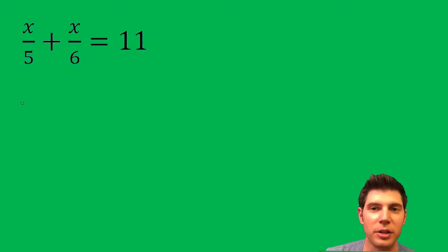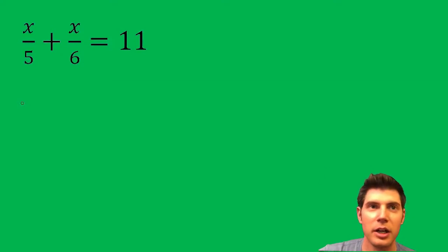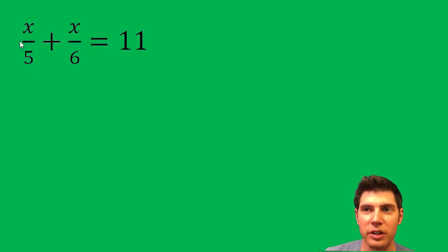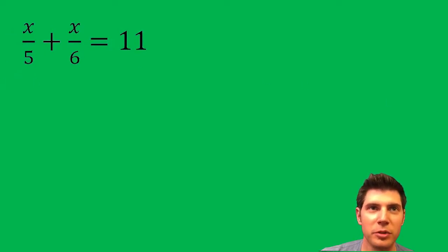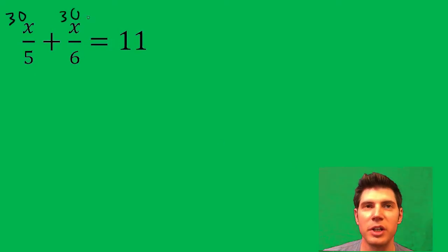Hey guys, welcome to this video. We're going to solve for x. What I like to do here to get rid of the fractions is something I call clearing the fractions. You're going to multiply everything by whatever is going to clear out all the fractions. So in this case, if we multiply everything by 30, that's okay to do because we're multiplying both sides by 30.